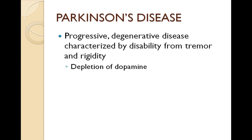Today we're going to begin with Parkinson's disease. Parkinson's disease is a progressive degenerative disability and the person suffers with tremors and rigidity. What happens with Parkinson's disease is a depletion of dopamine. Dopamine is what the body needs to influence initiation, modulation, and completion of movements among other things. It also helps to regulate autonomic movements.